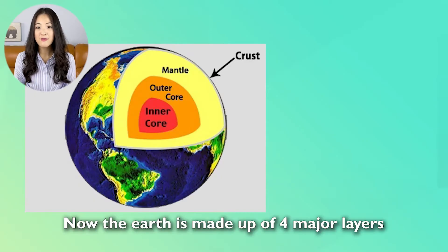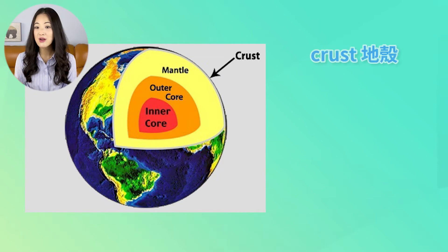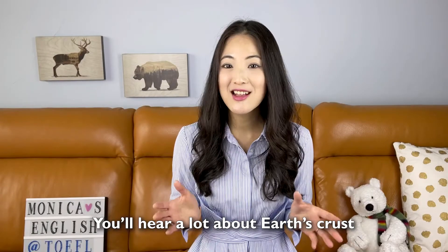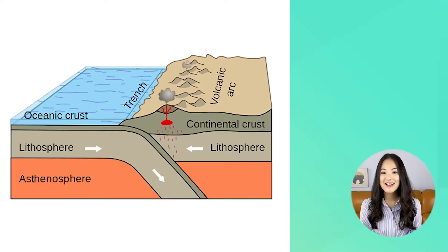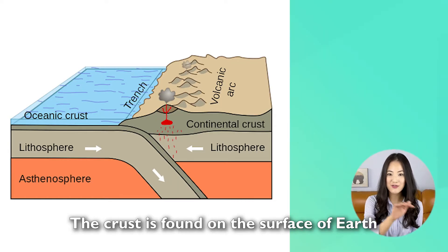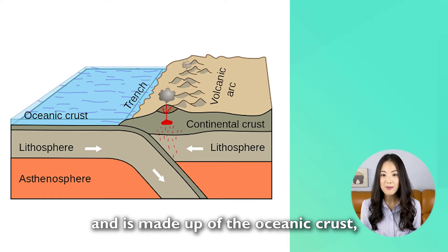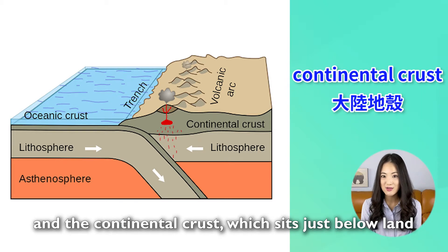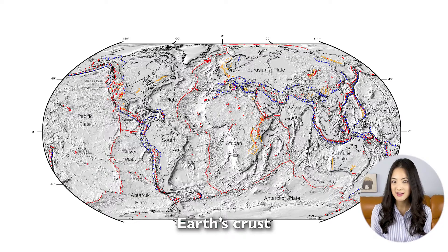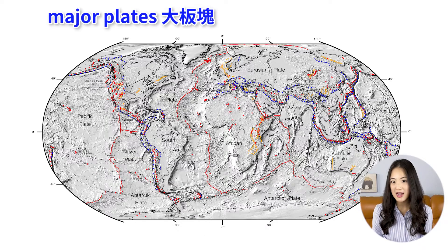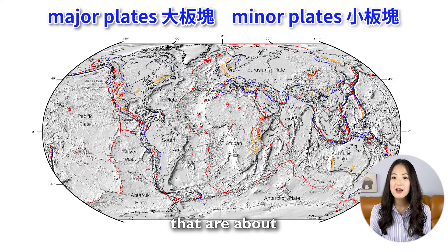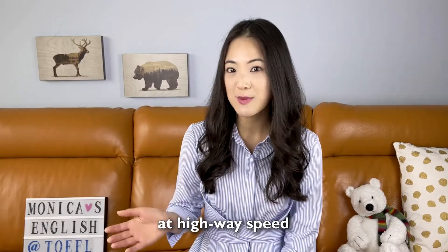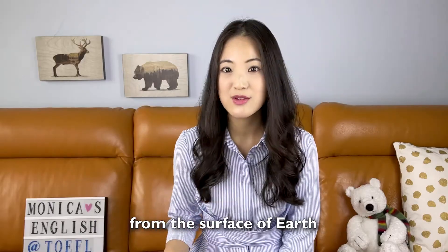The Earth is made up of four major layers: the crust, the mantle, the outer core, and the inner core. You hear a lot about Earth's crust on the TOEFL exam. The crust is found on the surface of Earth, and it's made up of the oceanic crust, which is covered by water, and the continental crust, which sits just below land. Earth's crust consists of major plates and minor plates that are about 100 kilometers thick, which means it would take about an hour's drive at highway speed to get to the bottom of the plates from the surface of Earth.